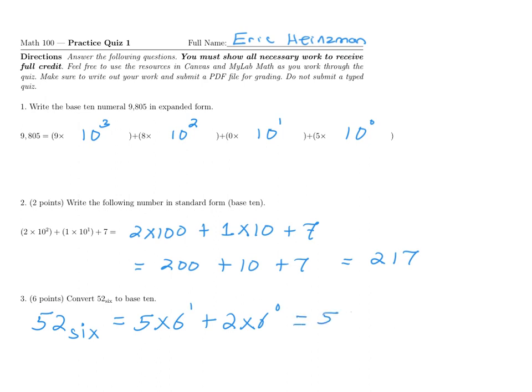This is really 5 times 6 plus 2 times 1. 5 times 6 is 30, 2 times 1 is 2, and here we have 32. For emphasis, I'll put that this is in base 10, and this is the answer for problem 3.